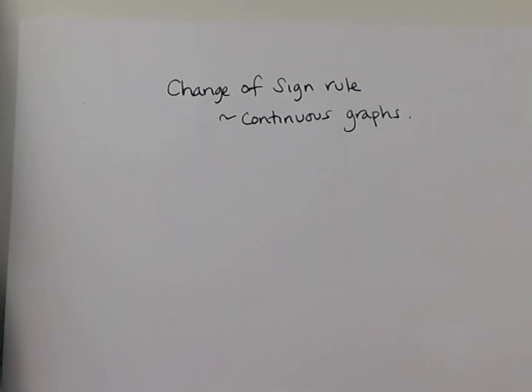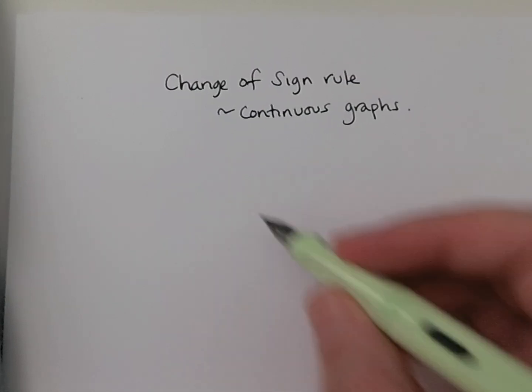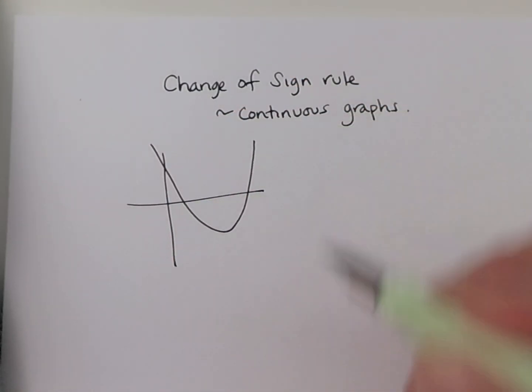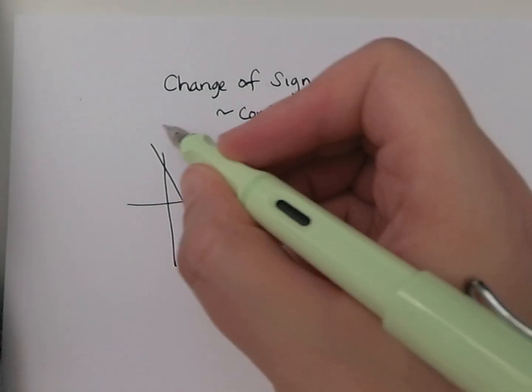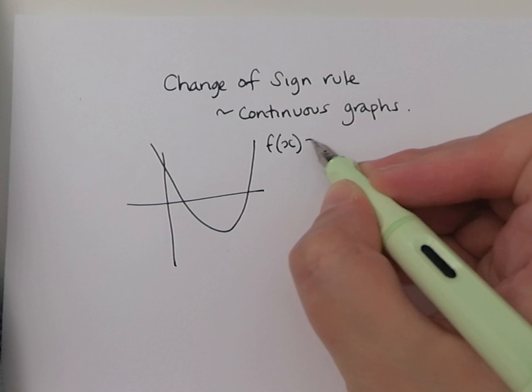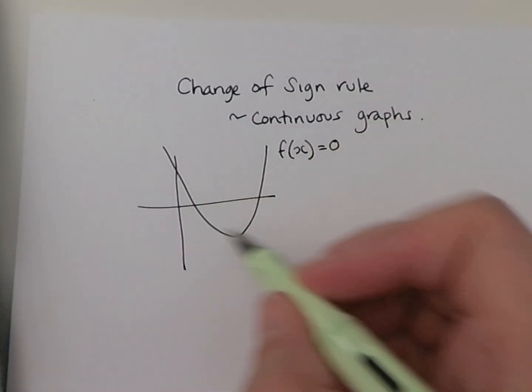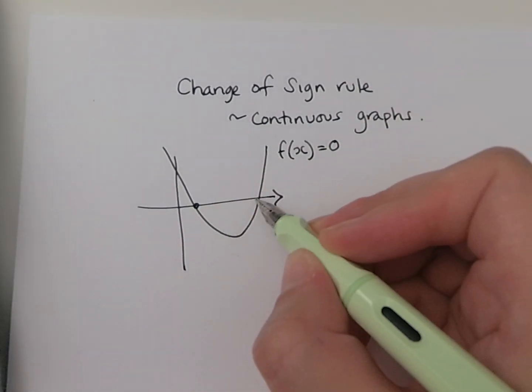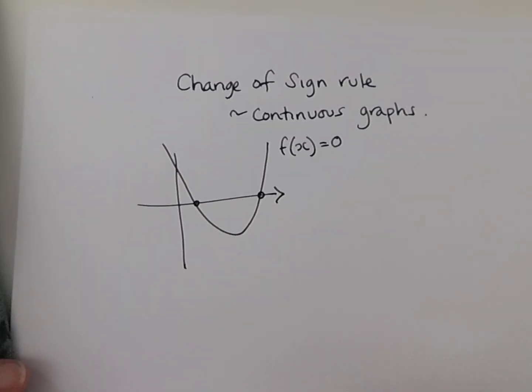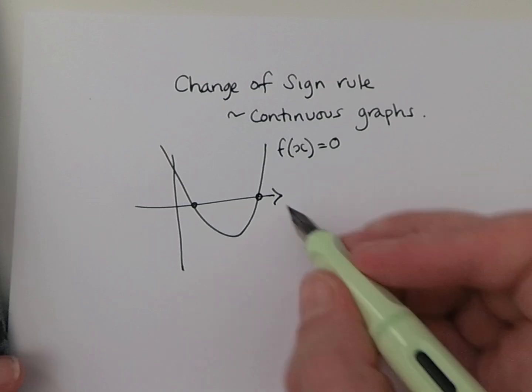You should know the shapes of certain curved graphs now. Hopefully you would recognize that this parabola, for example, is a quadratic curve. Where this function cuts the x-axis, these two points are solutions of the graph and they're sometimes also known as roots.